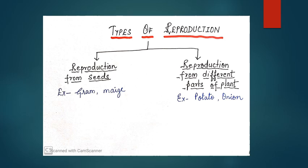Now this reproduction can be of two types, either it can be from seeds or it can be through different parts of plant. And to understand this we need to understand or see the different parts of a plant.